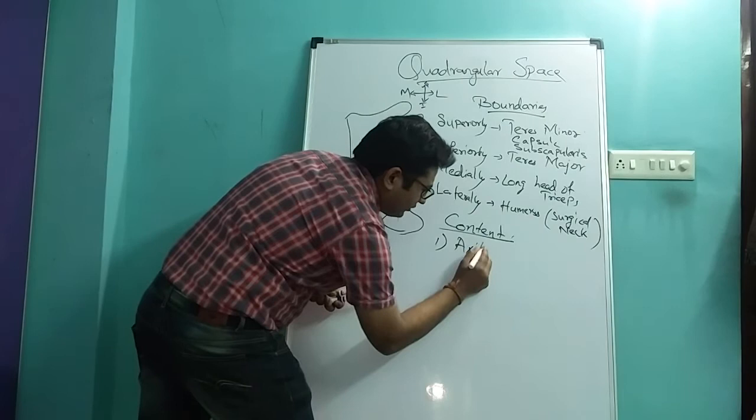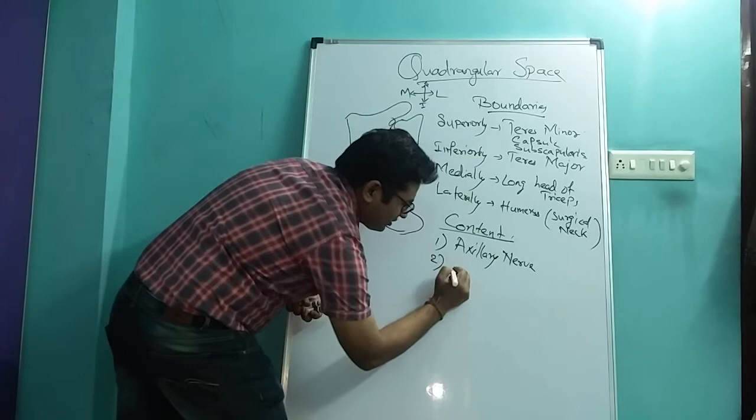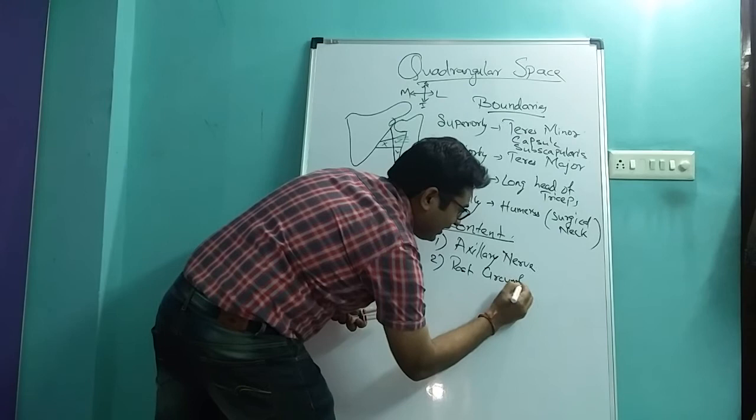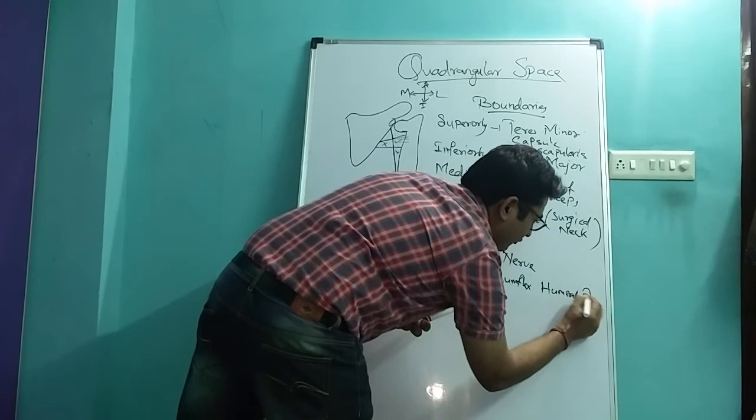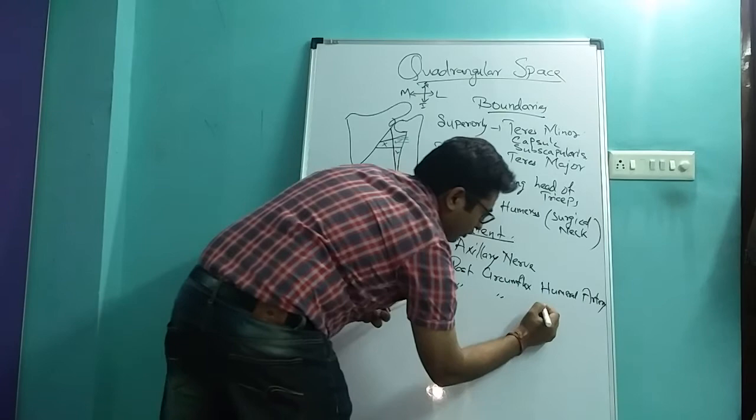Axillary nerve which is related with the surgical neck, then is posterior circumflex - circumflex means winding around, winding around what? Humerus. So it is posterior circumflex humeral artery, and then after that is posterior circumflex humeral vein. So these are the three contents.